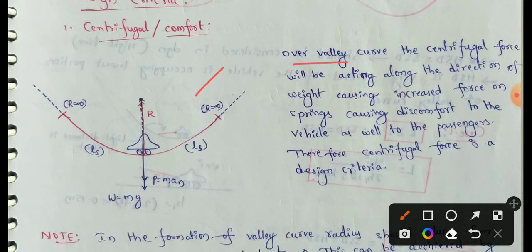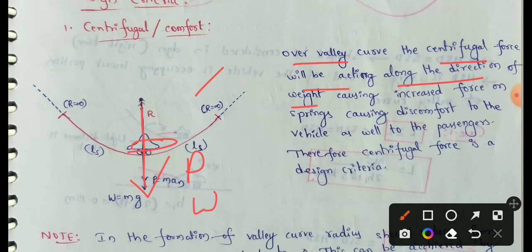Over the valley curve, the centrifugal force acts along the direction of weight — that is, in the downward direction. This means the effective force on passengers increases, and the driver and passengers will experience a discomfort feeling. Therefore, the rate of change of centrifugal acceleration is one of the key design criteria for valley curves.